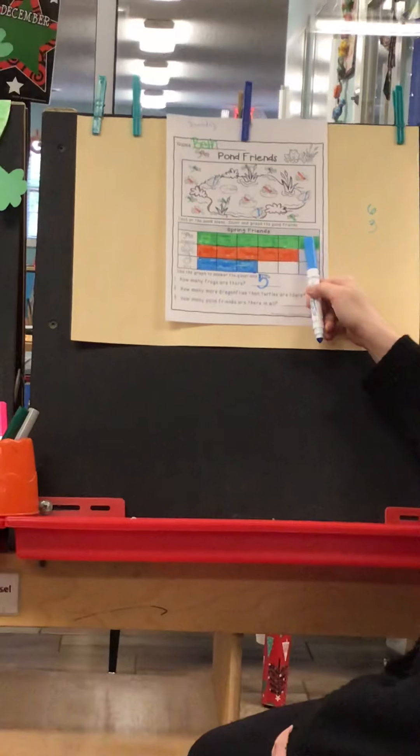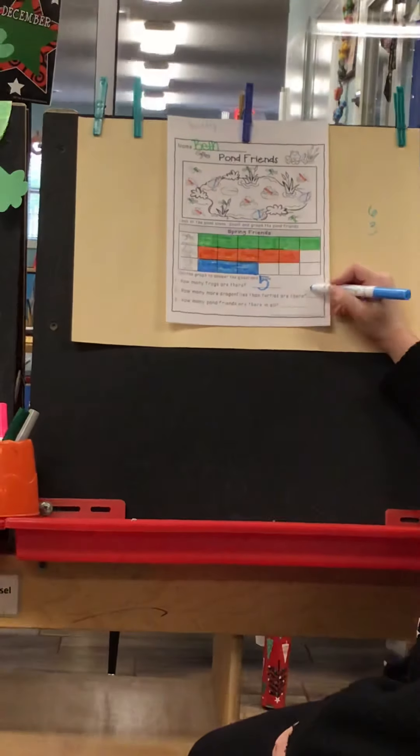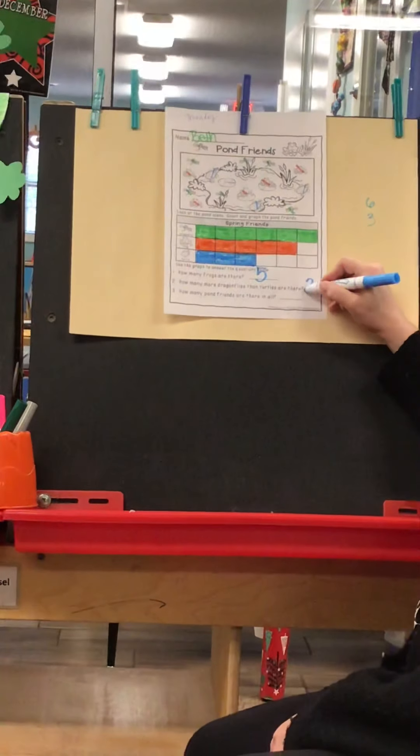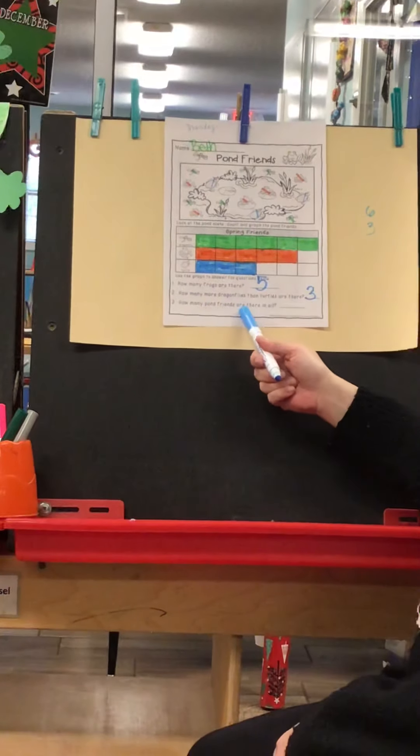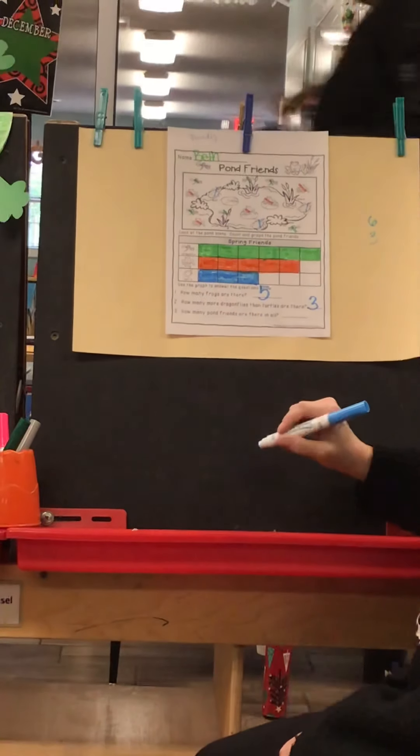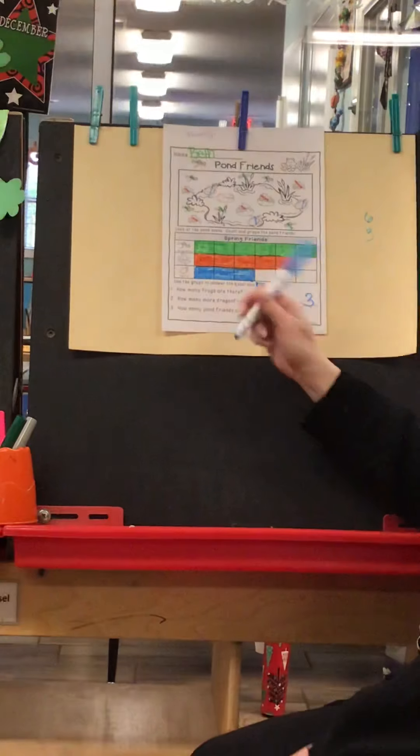One, two, three more dragonflies than turtles. So the answer is three. Now the last question says, how many pond friends are there in all? So let's count all of our colored squares. That's how you would count it.